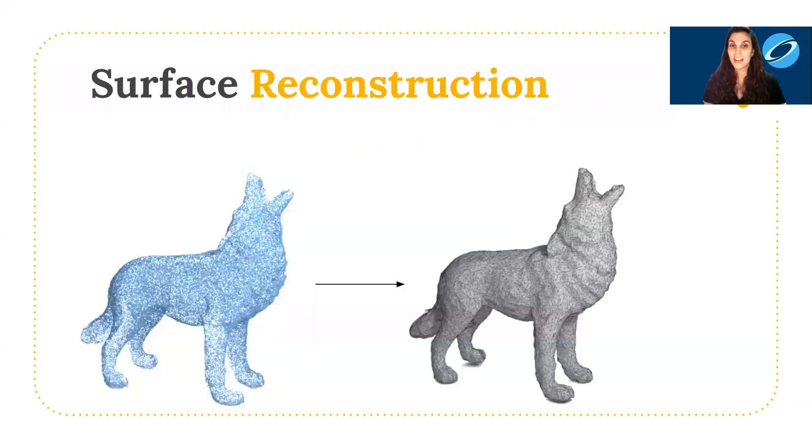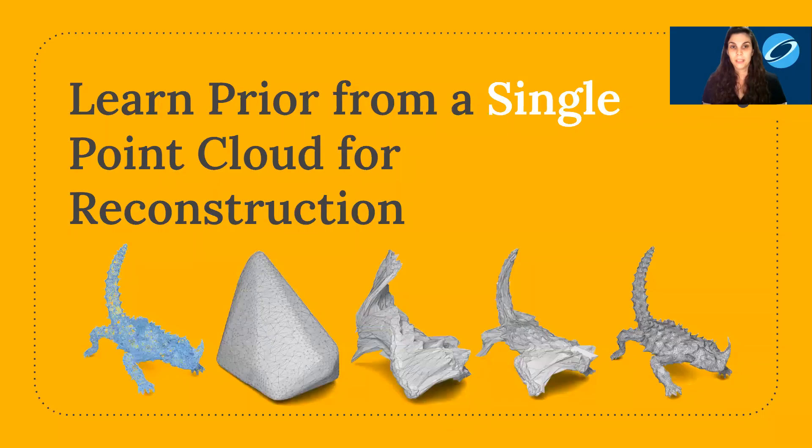We are interested in reconstructing a surface mesh from an input point cloud, which is a long-standing problem in computer graphics and computer vision. In this work we present a method for reconstructing watertight meshes from point clouds where the prior is defined by a convolutional neural network.